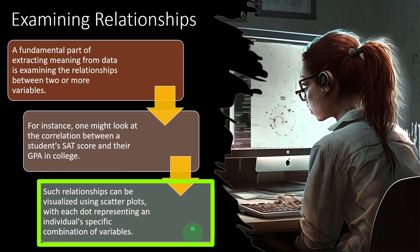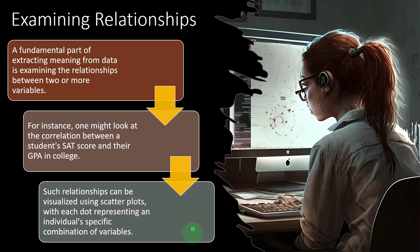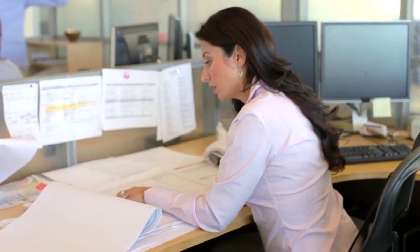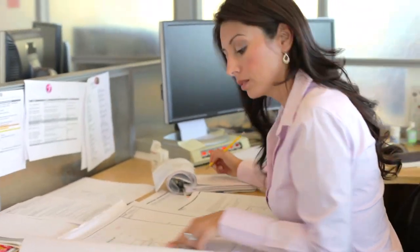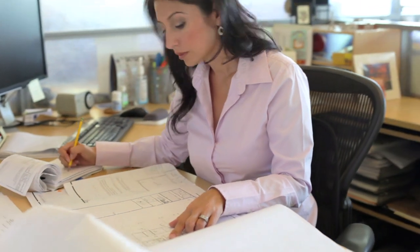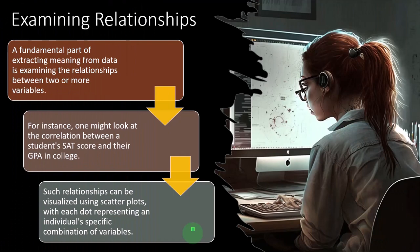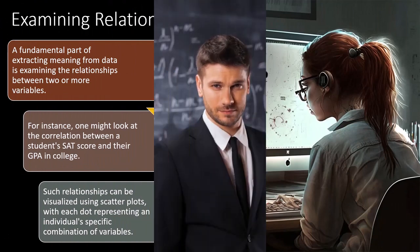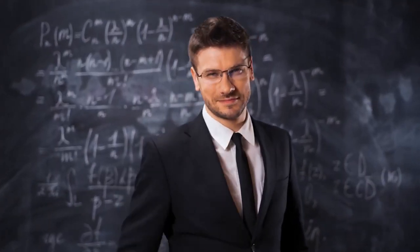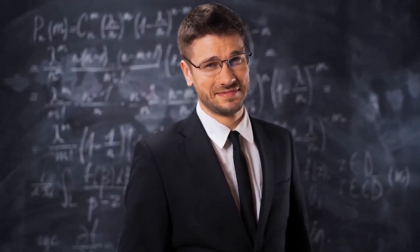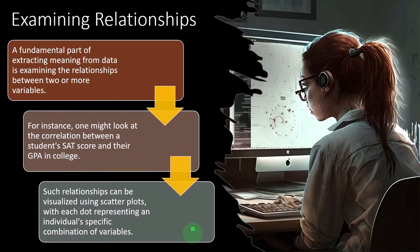So such relationship can be visualized using scatter plots. So in a scatter plot with each dot representing an individual specific combination of variables. So we can plot basically the GPA against the SAT scores and see if there's a trend. And then we can really see, and statistics is really looking for this kind of statistics is to see if these two things have a correlation. Do they happen kind of in uniform and unison to each other? And in this case, we're usually not going to find like a direct correlation, but they seem to move in the same direction with each other is kind of what we're looking for in statistics.